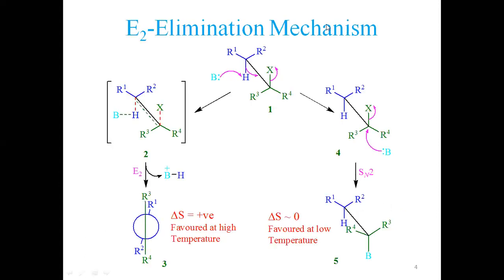Elimination always competes with substitution, but we have strategies to minimize substitution and maximize elimination. If we use a strong base that is a poor nucleophile, elimination is favored. Also, in the E2 reaction, the products include an olefin, a protonated base, and the leaving group X — three products compared to two in SN2.